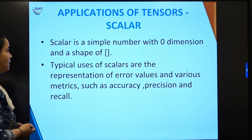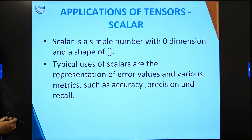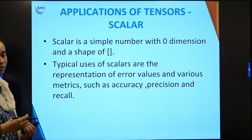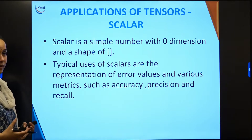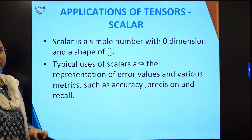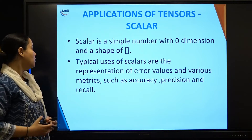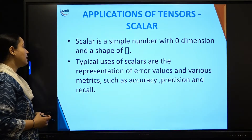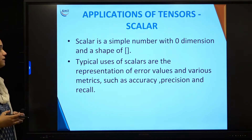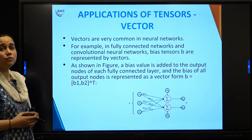Moving on, we will see the applications of tensors as a scalar. A scalar is a simple number with zero dimensions, and the shape is represented by two empty square brackets. The typical uses of scalars are the representation of error values — for example, the mean square error you calculate throughout your model is a scalar. Other metrics such as accuracy, precision, and recall when working with classification are all scalars. So whenever you predict the accuracy of a model, that comes as a scalar.